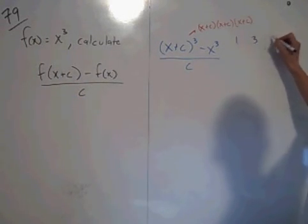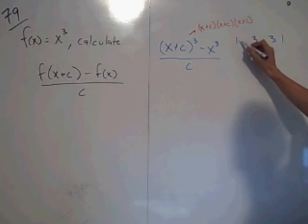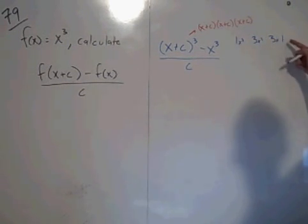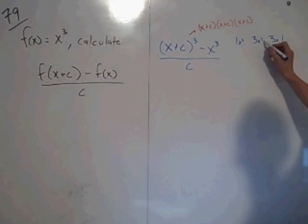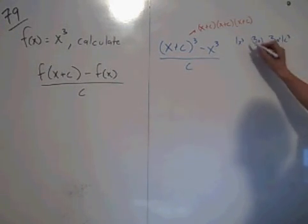...1, 3, 3, and 1. Then you have x cubed, x squared, x, x to the 0, c to the 0, c to the 1, c squared, c cubed.